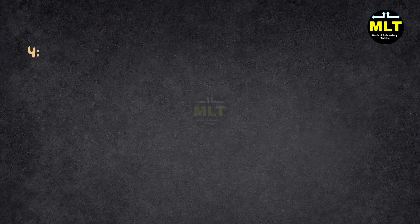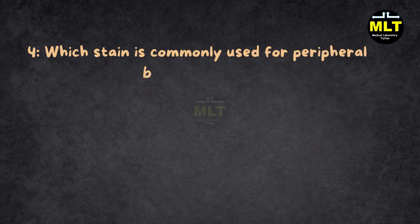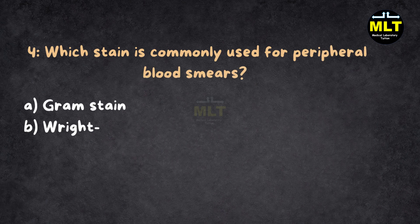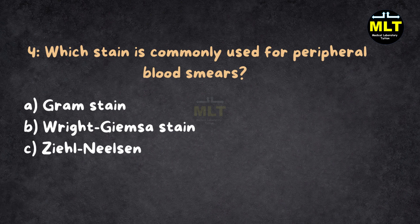MCQ 4. Which stain is commonly used for peripheral blood smears? A. Gram stain. B. Wright-Giemsa stain. C. Ziehl-Neelsen stain. D. Leishman stain.